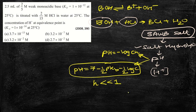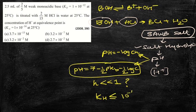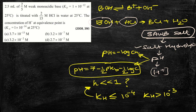To check whether the simplified formula is valid, we need to verify if the degree of hydrolysis h is much less than 1. To do this, we first need to find Kh. If Kh ≤ 10⁻⁴, the assumption holds. If Kh > 10⁻³, we cannot use the simplified formula.